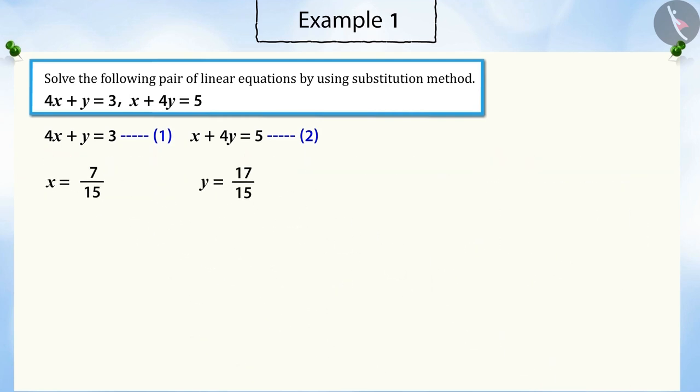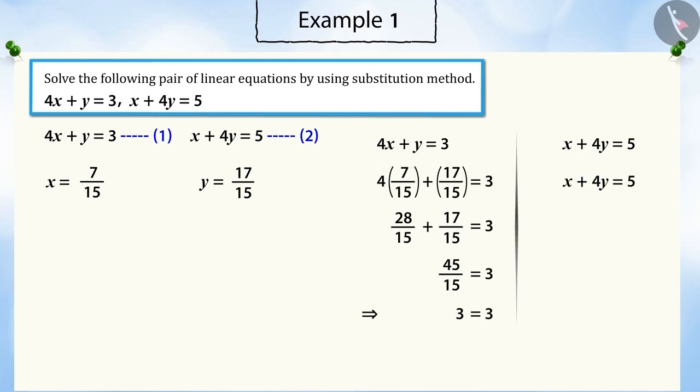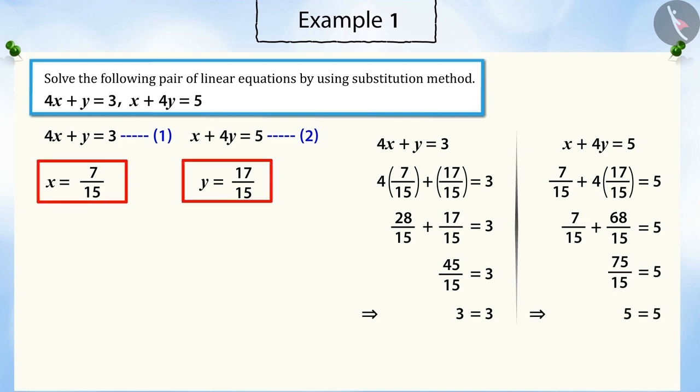We substitute the values of x and y in equations 1 and 2. And on solving, it can be proved that x is equal to 7 by 15 and y is equal to 17 by 15. This is a unique solution to this pair of linear equations.